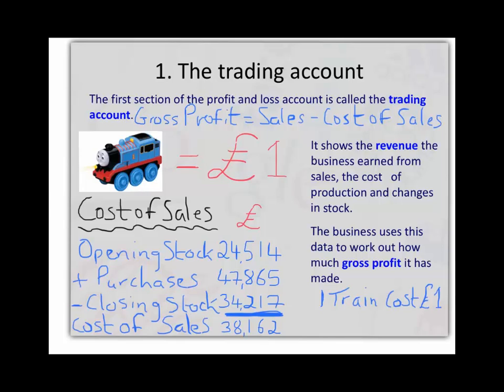So if each toy train costs us a pound, at the beginning of the financial year we would have had twenty-four thousand five hundred and fourteen toy trains multiplied by a pound each, giving us an opening stock value of £24,514. The accountants do go into the shop or warehouse and count exactly how many items of stock are left at the beginning and end of the year.